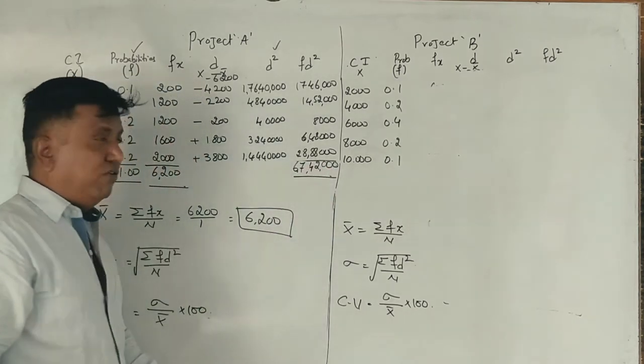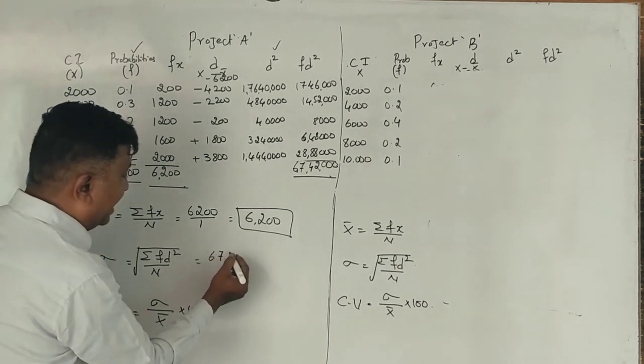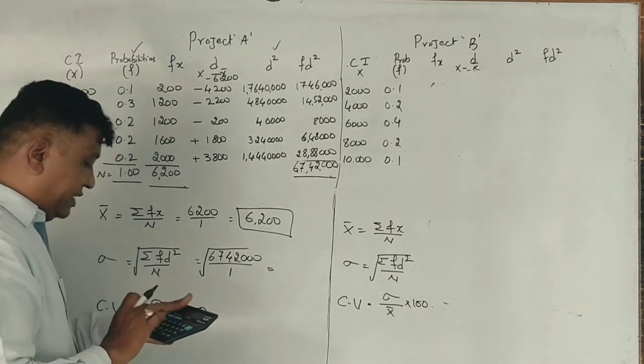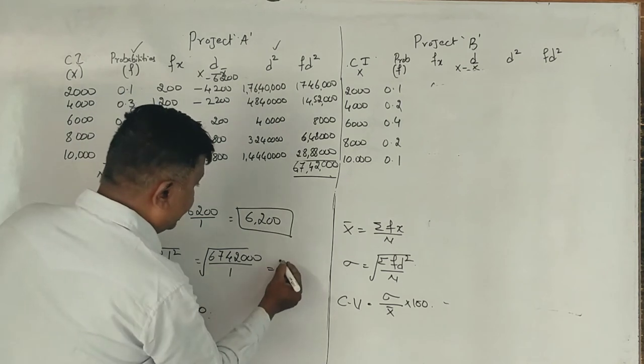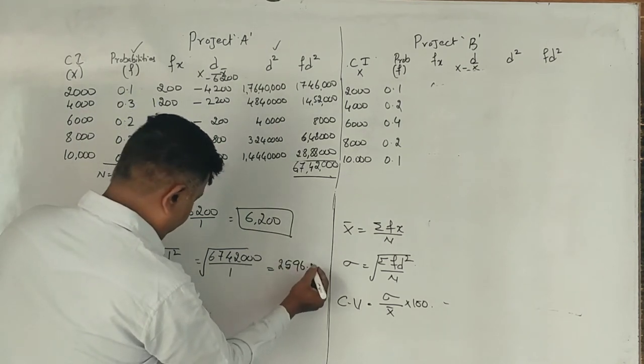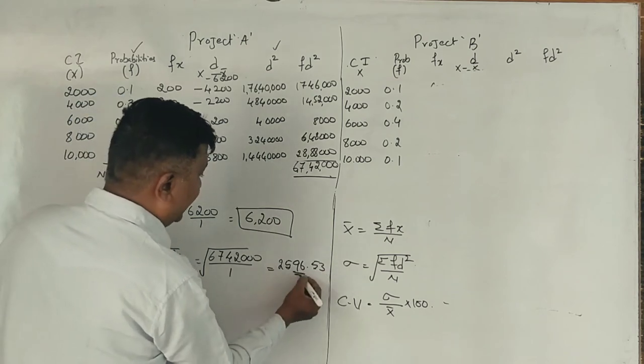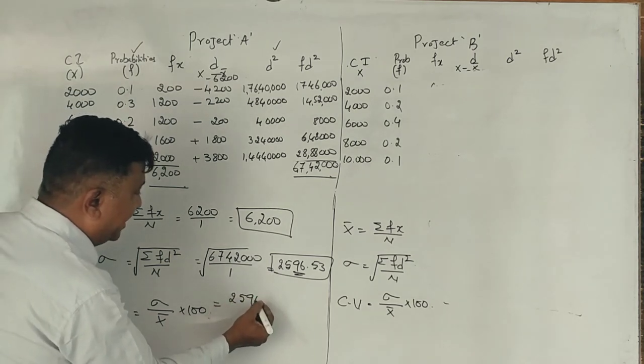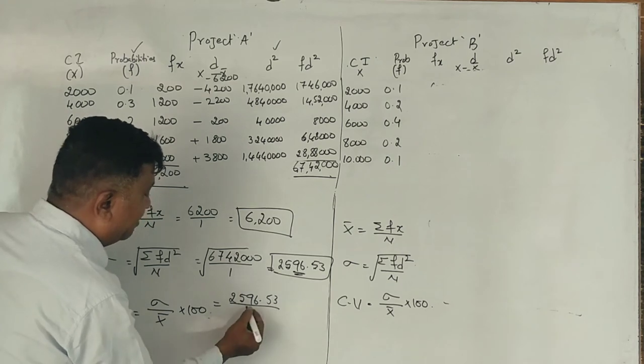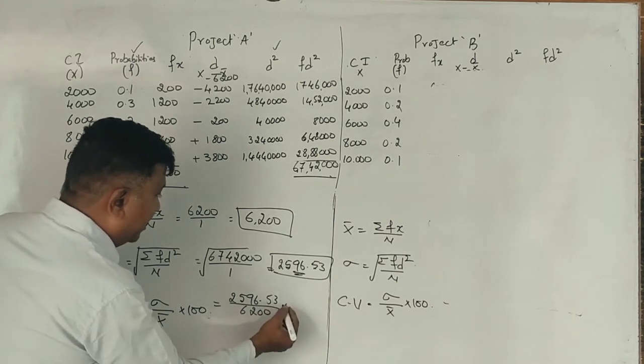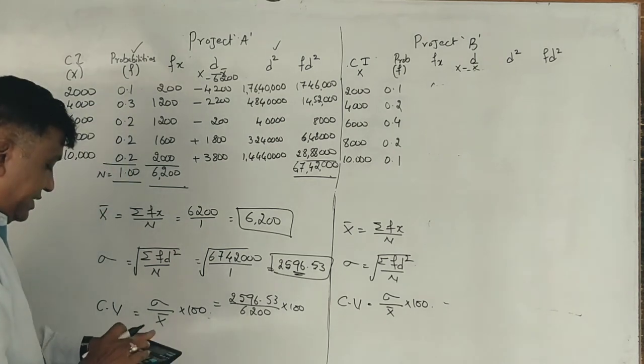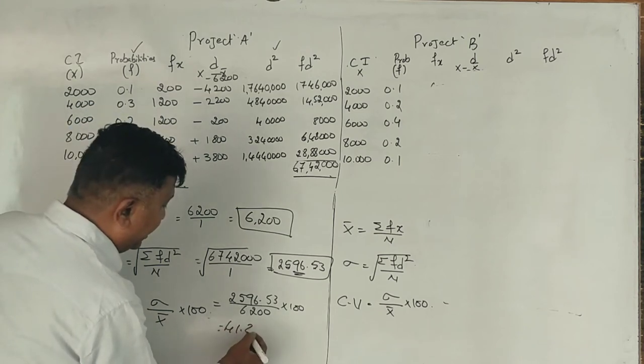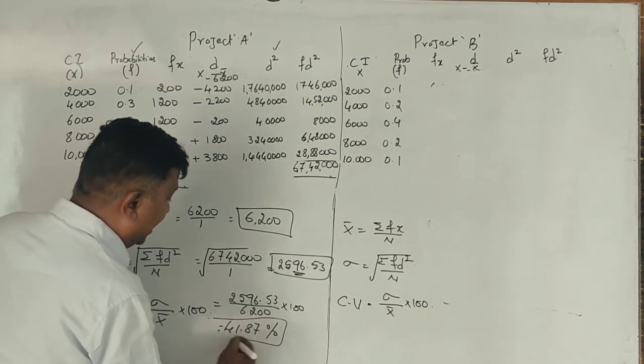Standard deviation is 2,596.25. Coefficient of variation: 2,596.25 divided by 6,200 into 100 equals 41.87%. Correct?